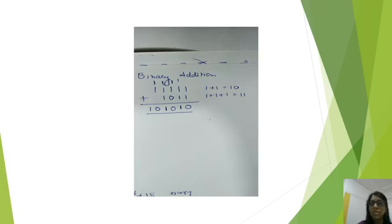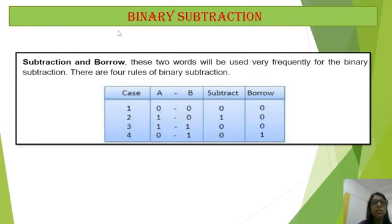Now let us see subtraction of numbers. When we are subtracting and borrowing, this is what is done. 0 minus 0 is 0, nothing is borrowed. 1 minus 0 is 1, nothing borrowed. 1 minus 1 is 0, and 0 minus 1 gives 0 as the answer and 1 is borrowed. Let us see through an example.